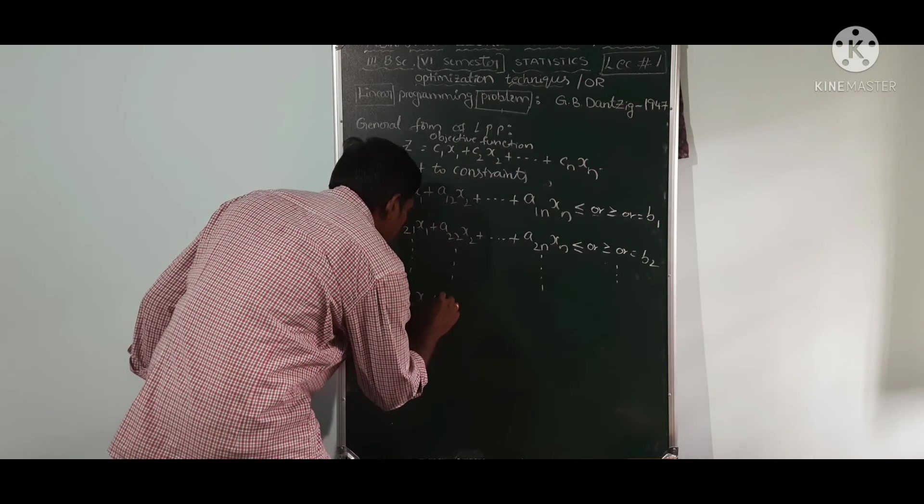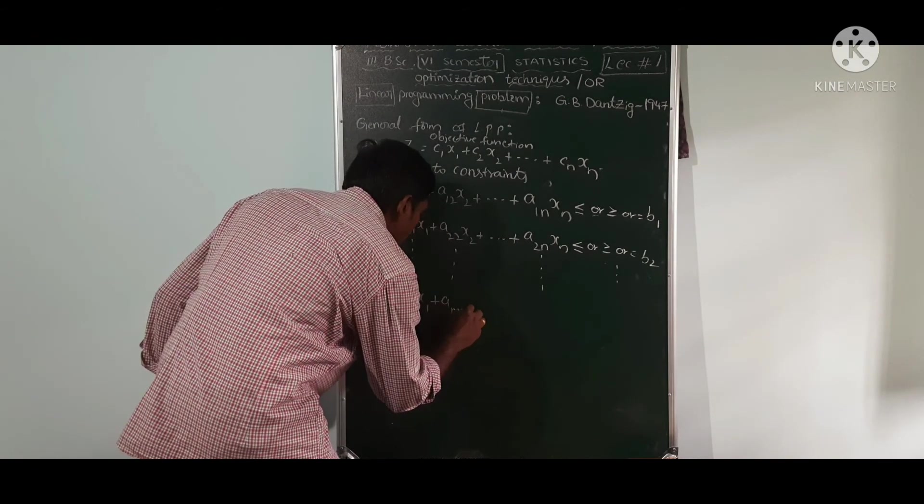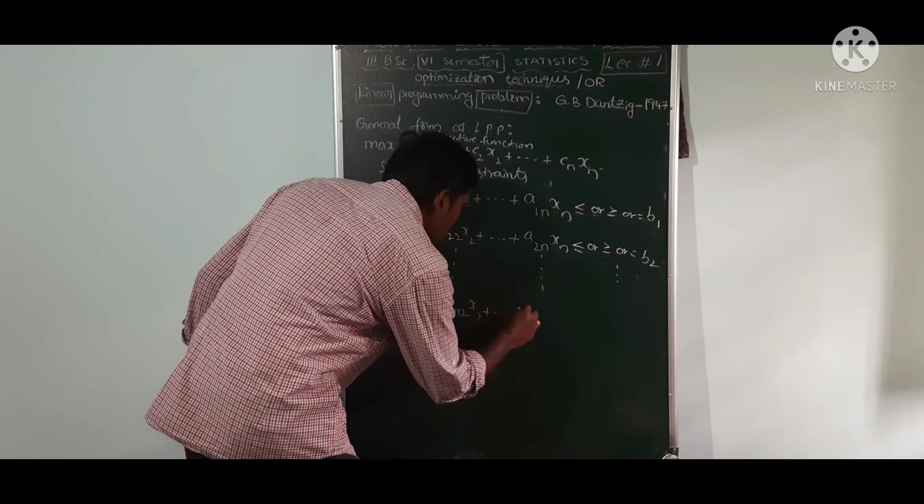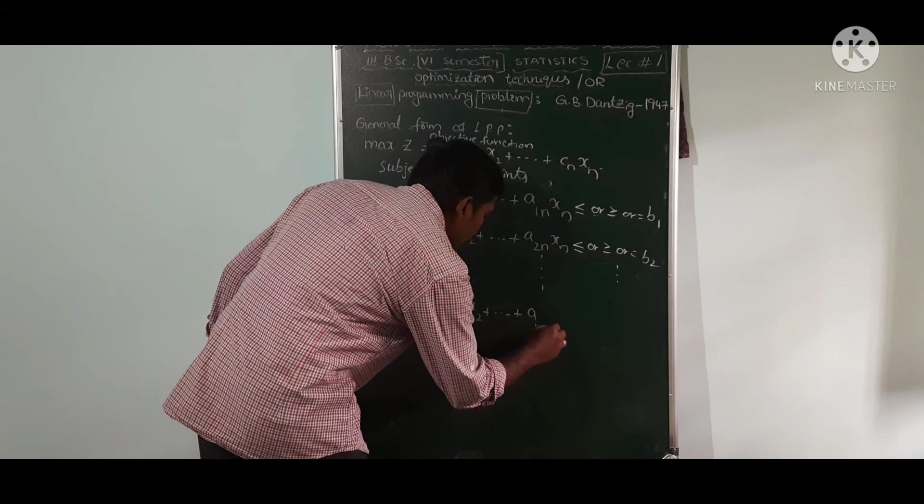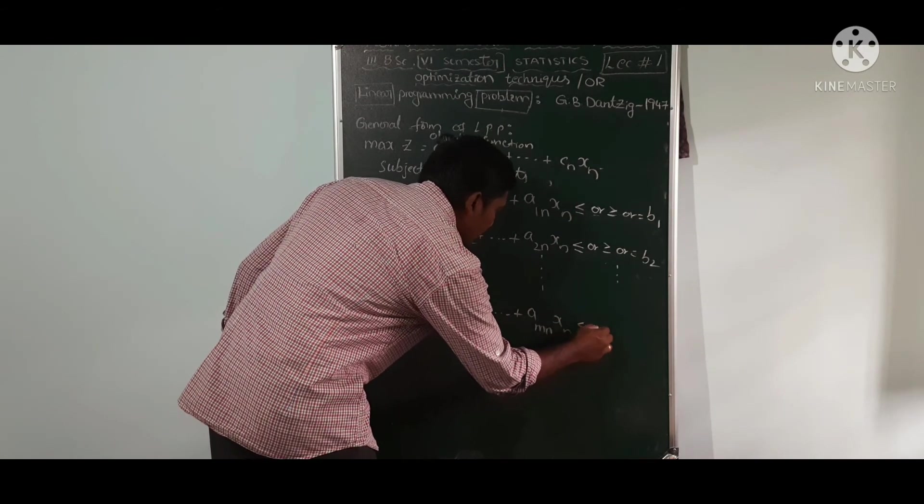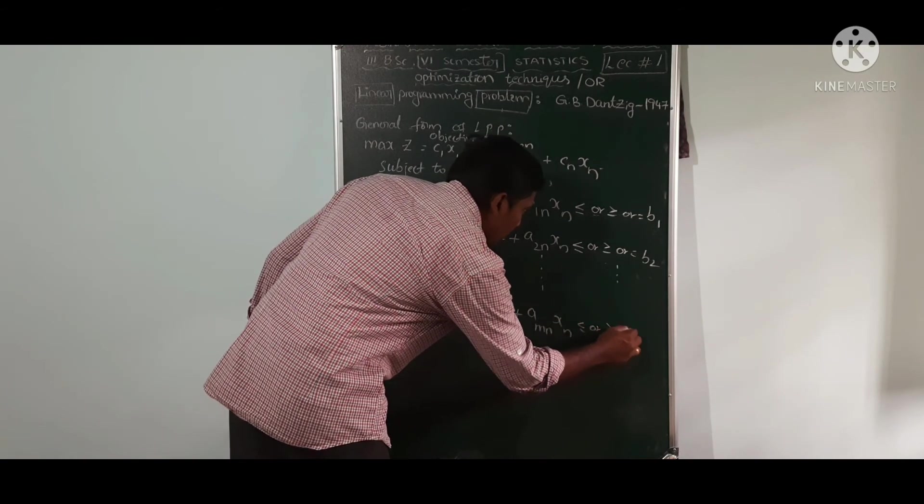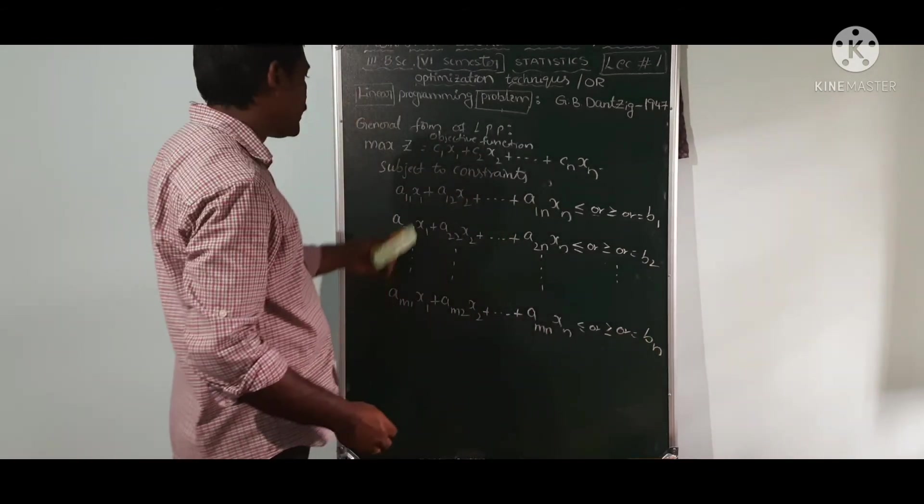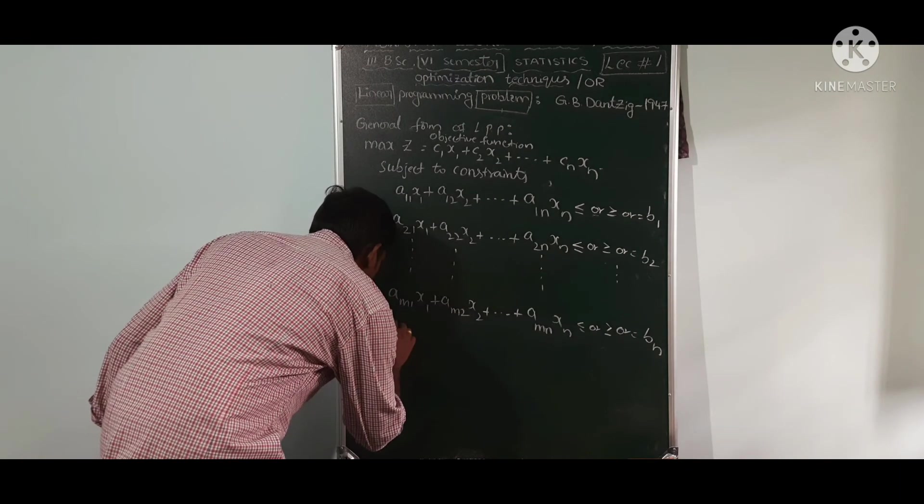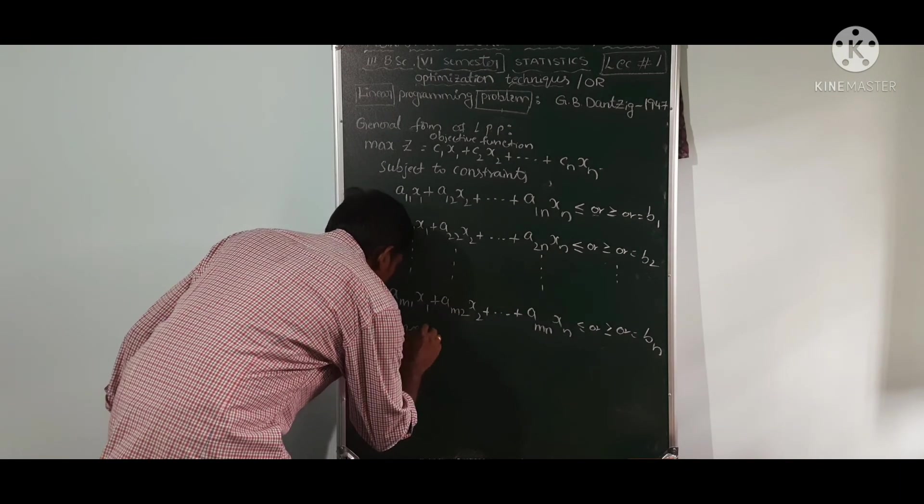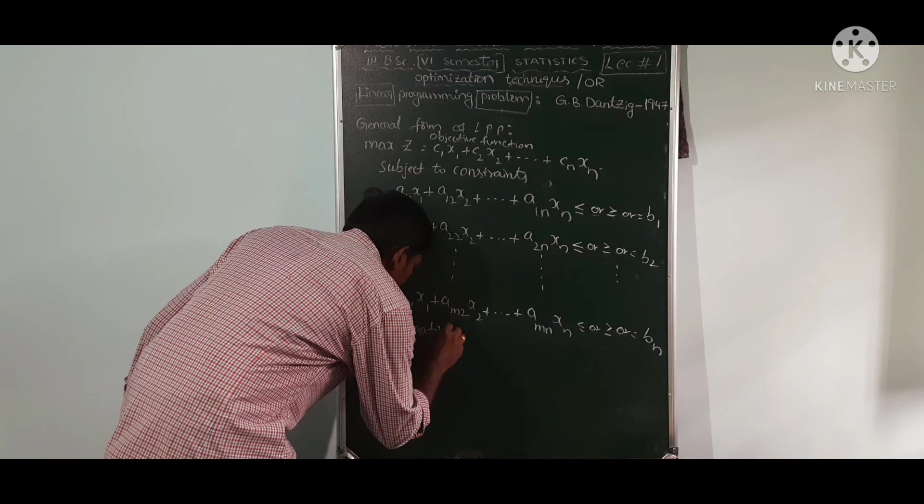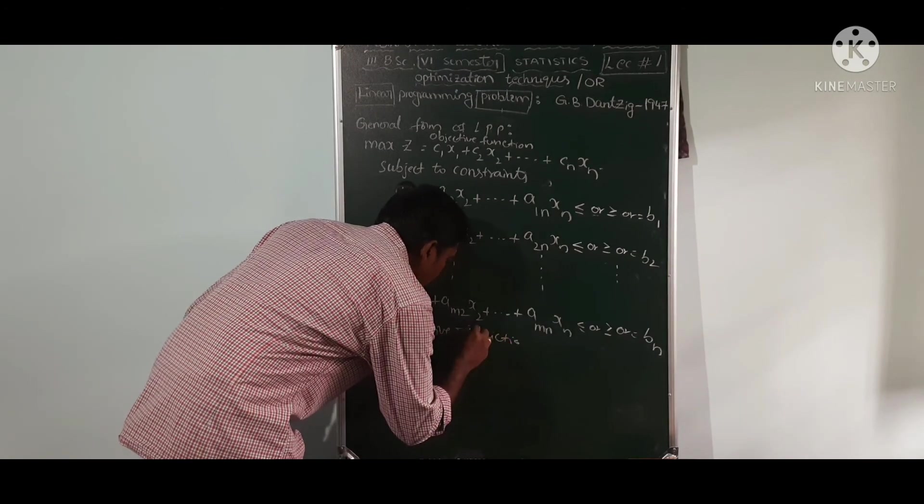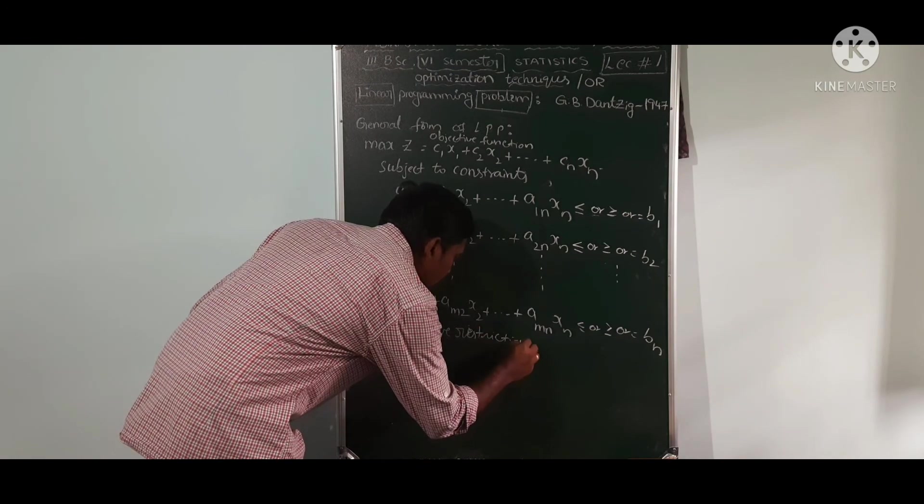A11 X1 plus A1 X2 plus and so on plus A1N Xn, greater than or equal to or less than or equal to or equal to Bn. This is subject to the constraints and the only non-negative restrictions.